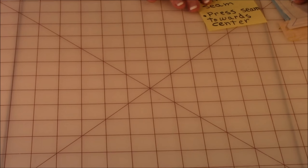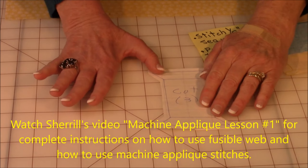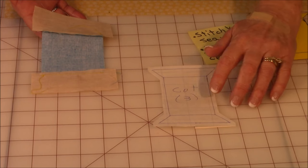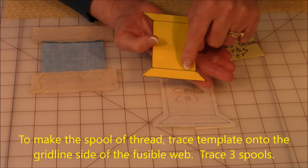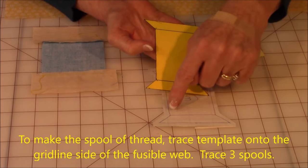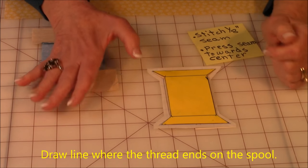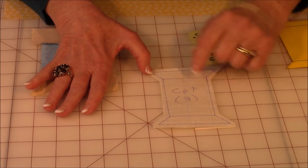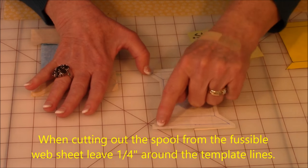Let's first put the spools of thread together. Here's my fusible webbing. Now I'm not going to go into a lot of detail with your fusible webbing. Watch my video Machine Appliqué Lesson 1 for details, detailed instructions on how to use fusible webbing. So take your template that you made and make sure you've drawn a line across here and you're going to draw that same line on your fusible webbing. This is important that you put that line on there. So trace three of these on the grid line side of the fusible webbing. Then when you cut it out of your fusible webbing sheet, leave about a fourth of an inch around your lines.